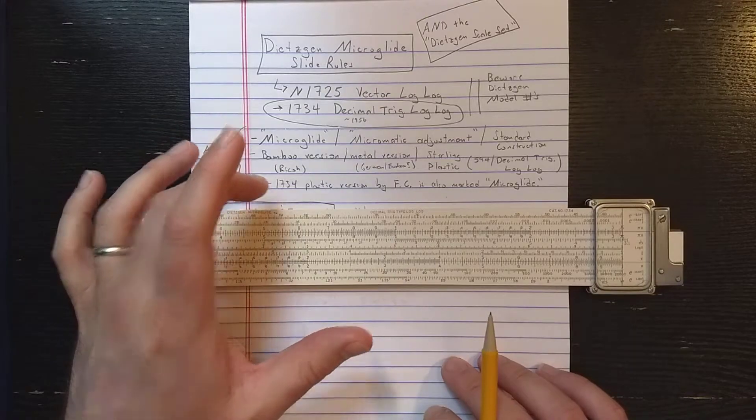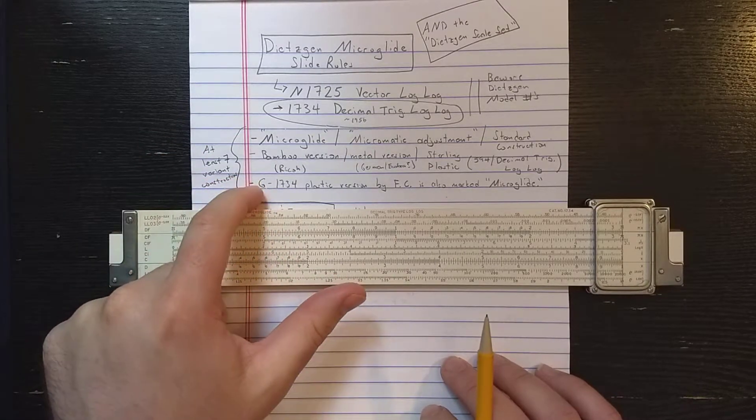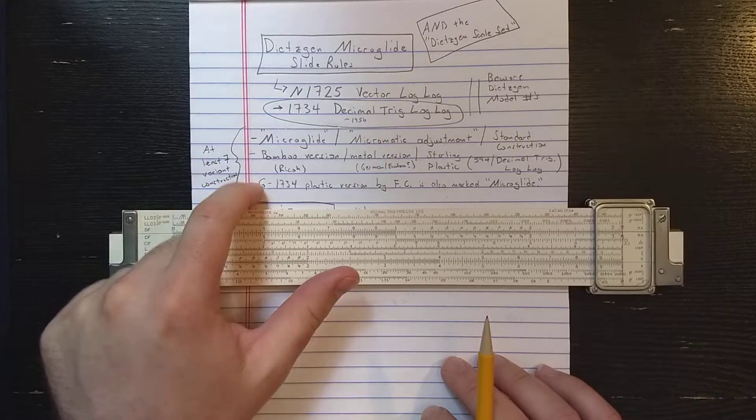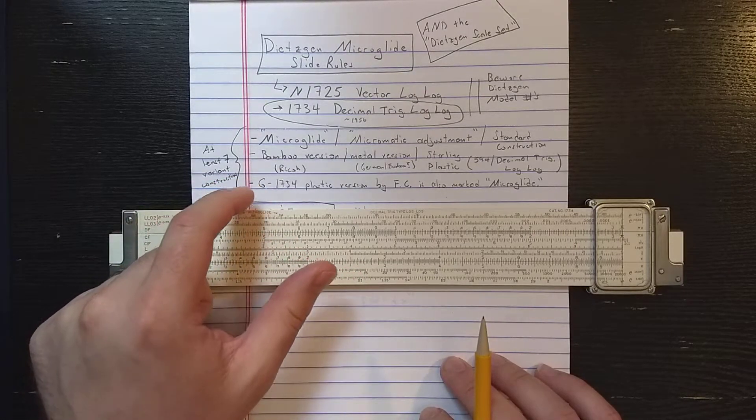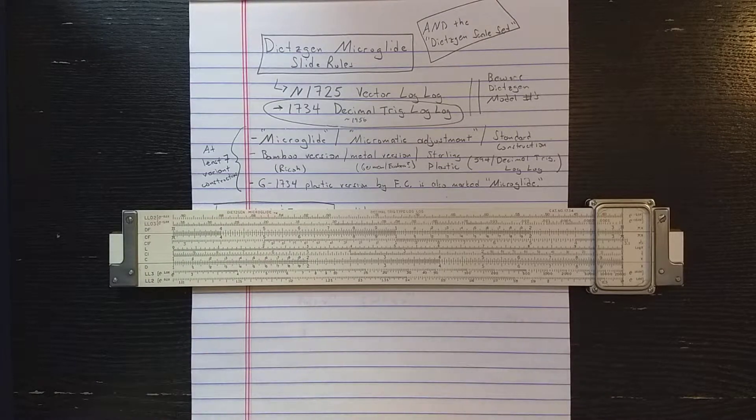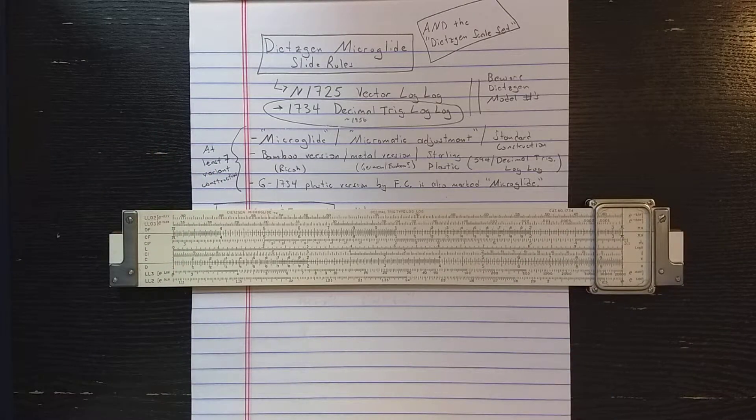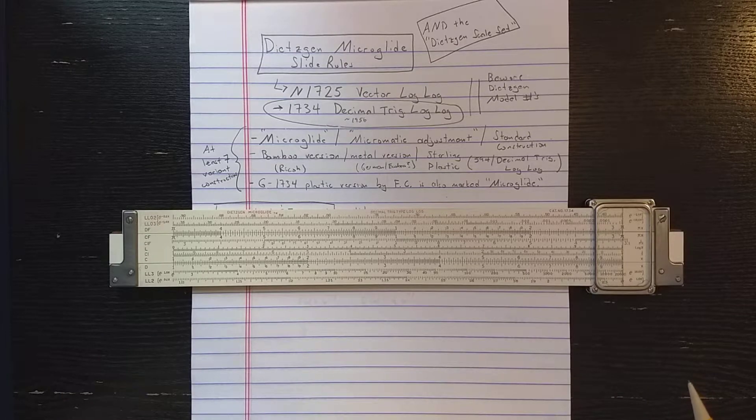Then there is the G1734 made by Faber-Castell. That one is confusingly marked microglide, even though I would say it doesn't have the microglide construction that this has. The G there is for Gerroplast, Faber-Castell's plastic compound. All of those slide rolls, that's at least seven different slide roll constructions, use the same scale set as this slide roll.